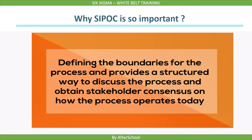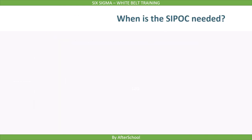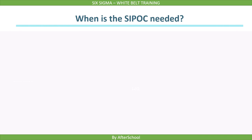SIPOC helps us in defining the boundaries for the process and provides a structured way to discuss the process and obtain stakeholder consensus on how the process operates today. It helps to answer questions like: what are the major steps in the process, where does the process begin and end, what are the primary inputs and outputs, and who are the key customers and suppliers.